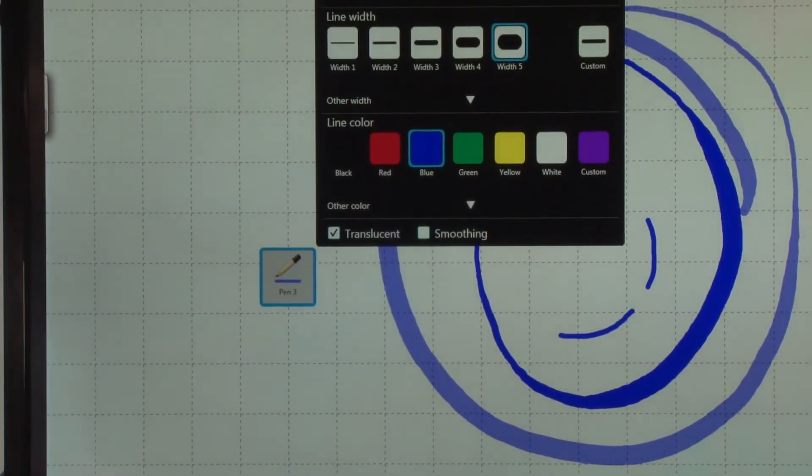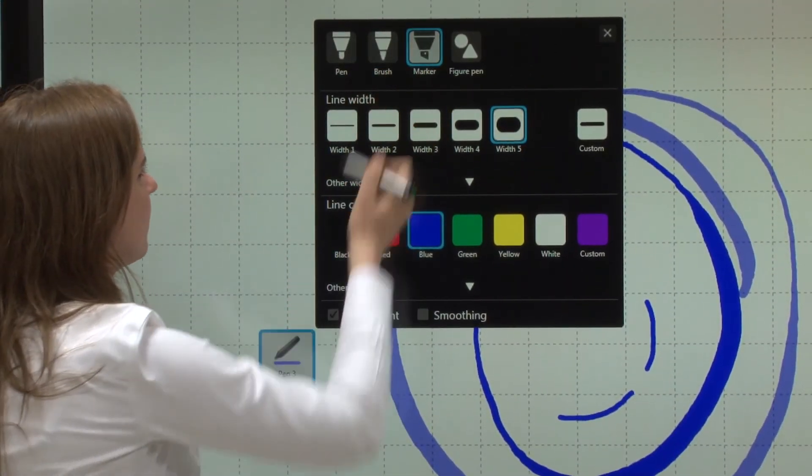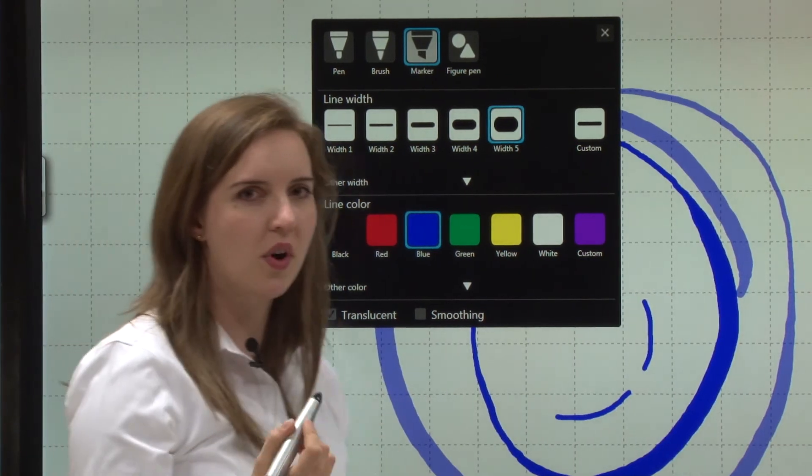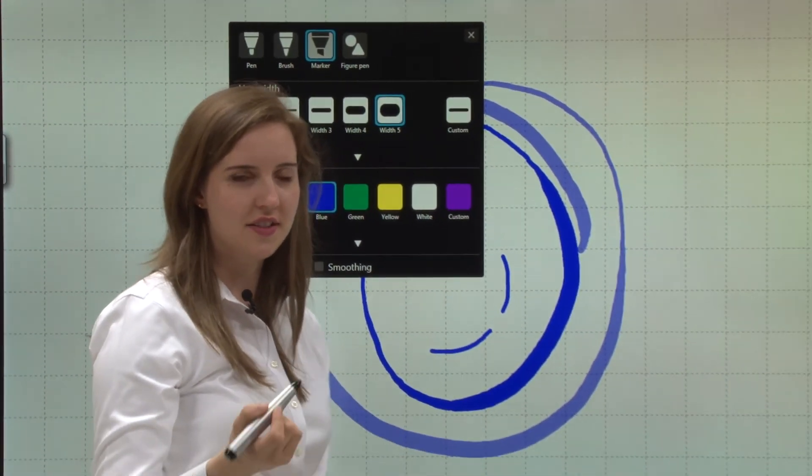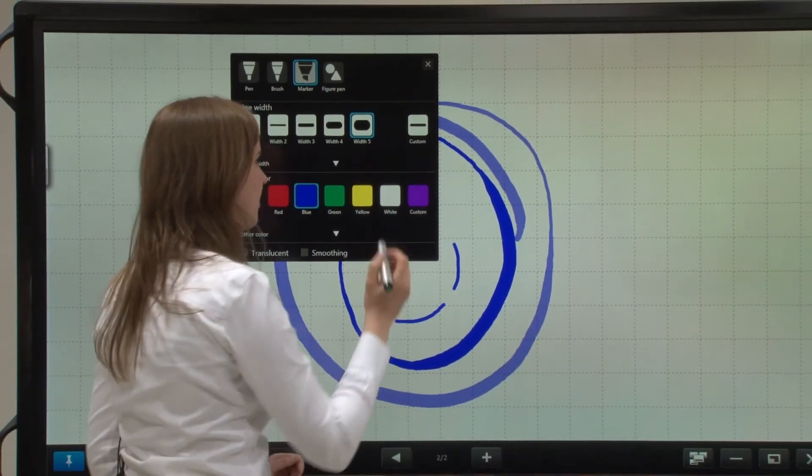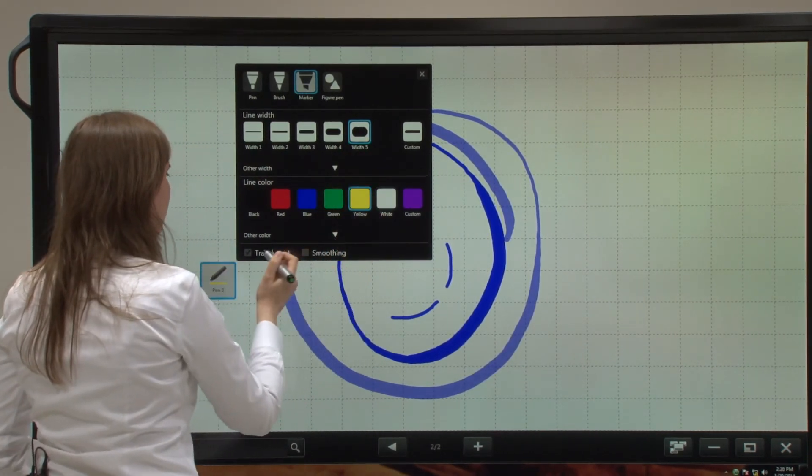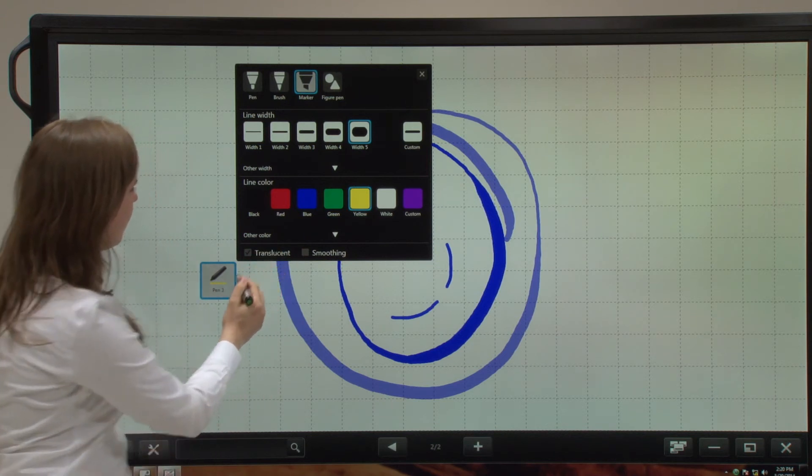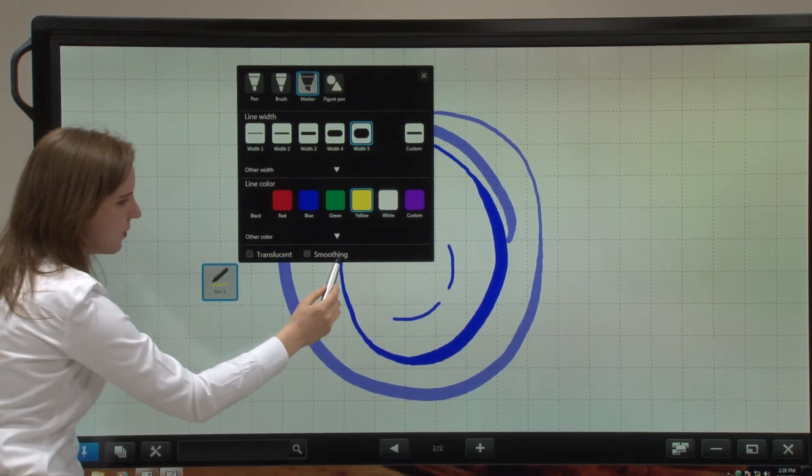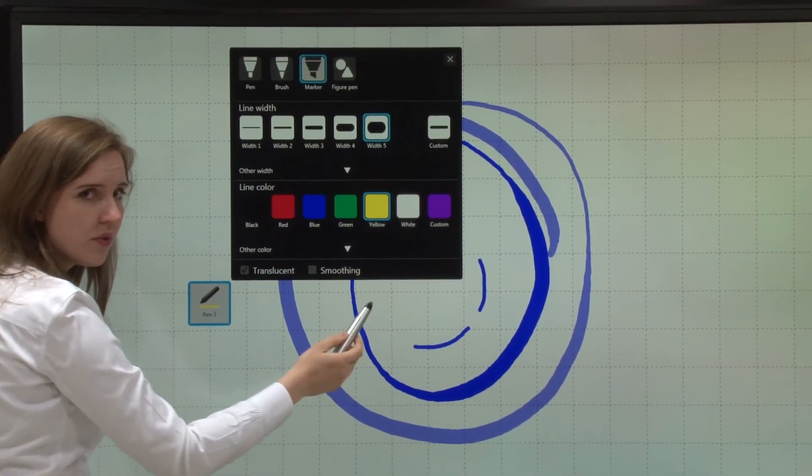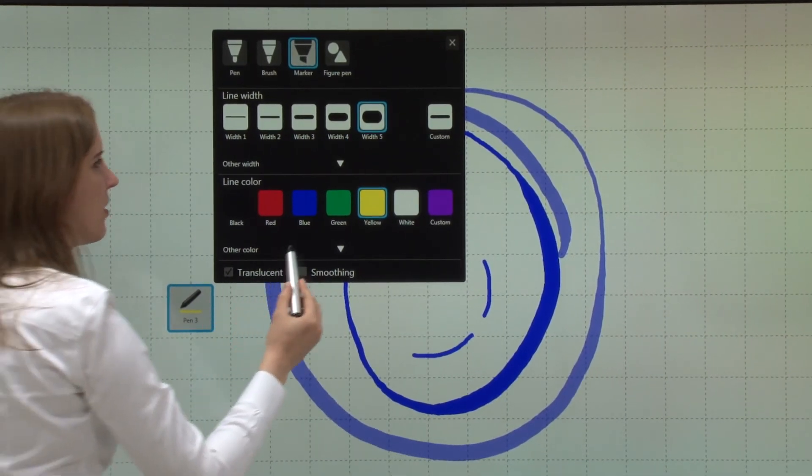Now the last feature we'll take a look at is the marker feature. Now think of this more as a highlighter than something that you'd actually write with. And I'll show you why. Let's pick a width of five and make it yellow. And down here you'll see the translucent and smoothing are grayed out. You can't choose them. That's because they happen automatically.